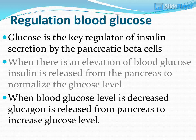Regulation of blood glucose: Glucose is the key regulator of insulin secretion by the pancreatic beta cells. When there is an elevation of blood glucose, insulin is released from the pancreas to normalize the glucose level. When blood glucose level is decreased, glucagon is released from the pancreas to increase glucose level.